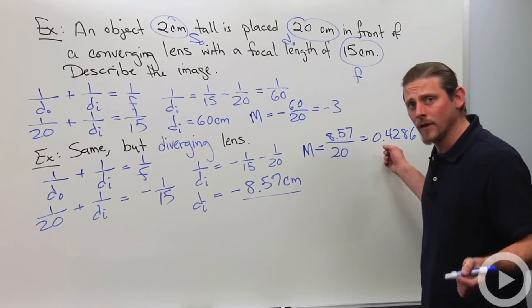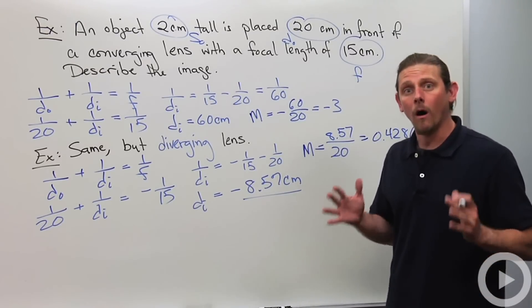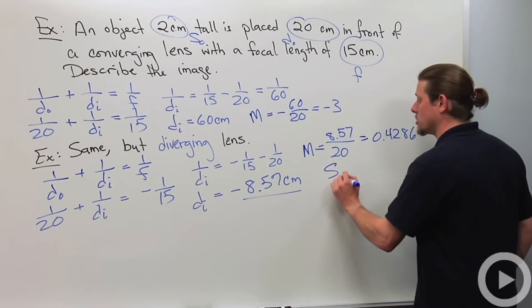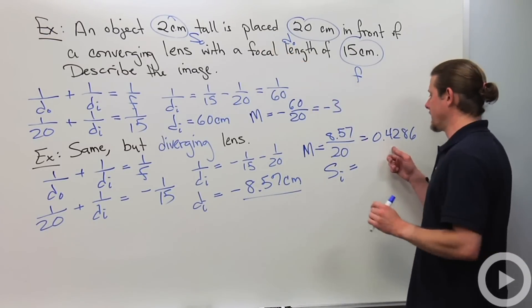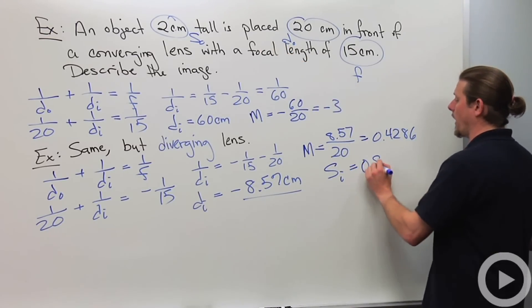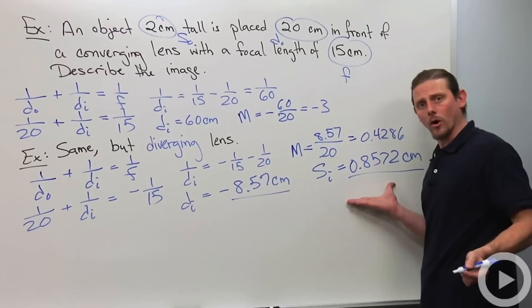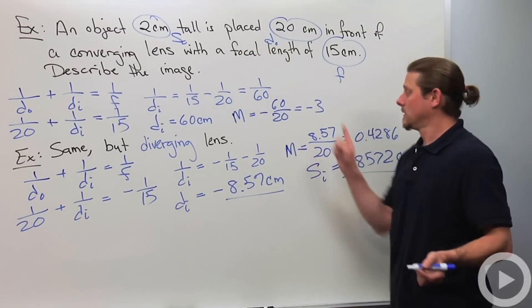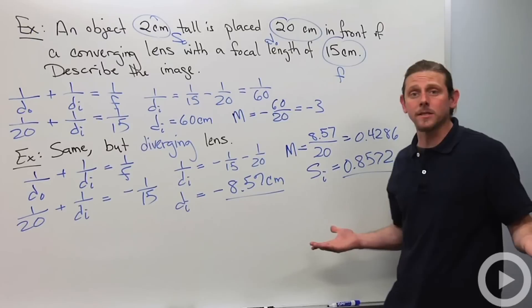In fact, we can calculate the magnification. Magnification is 8.57 divided by 20, because it's negative distance of the image over distance of the object. And this is 0.4286. The magnification is positive. That means that it is an erect or upright image. And the size of the image will be equal to this times the size of the object. So it's going to be 0.8572 centimeters, which is certainly less than the size of the object.